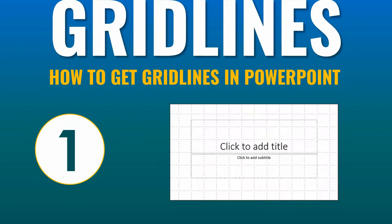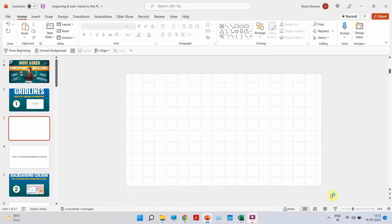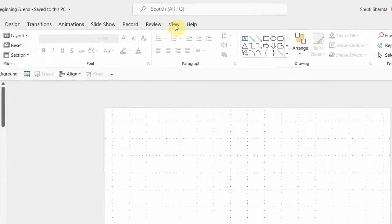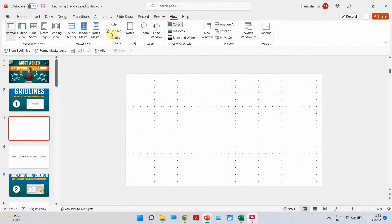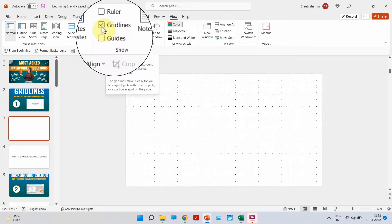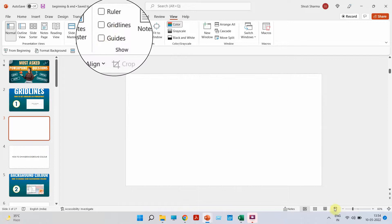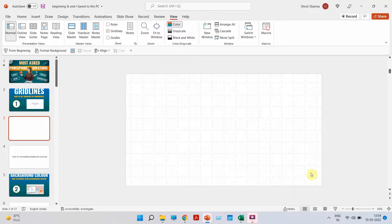How to get grid lines. These lines that you see right now are basically called grid lines. In order to get these, all you have to do is go to your View tab and tick mark the grid line option. If you untick this, you will see it has gone blank. The moment you tick mark the grid line box, you will see these grid lines.